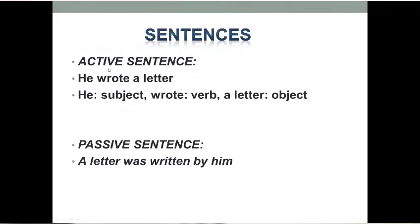Active sentence: 'He wrote a letter.' इस sentence में 'He' हमारे पास subject है, 'wrote' हमारे पास verb है, 'a letter' हमारे पास object है। जब active sentence passive में change होता है तो subject object बन जाता है, object subject बन जाता है, और verb की form rules के according change होती है। तो यह sentence passive में बन जाएगा: 'A letter was written by him.' यहाँ letter object था, अब subject बन गया। 'Wrote' की third form यहाँ use की।